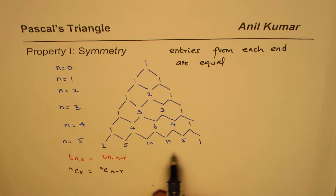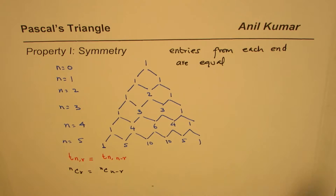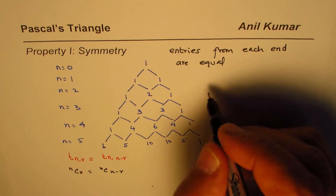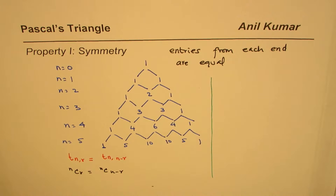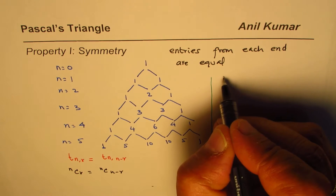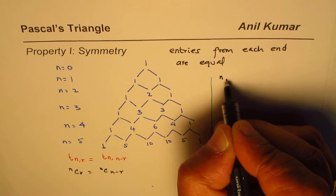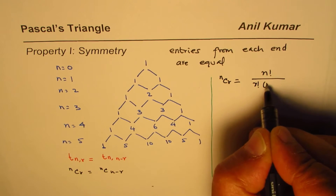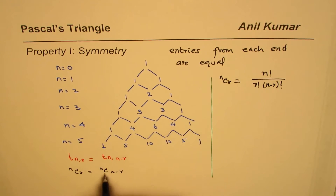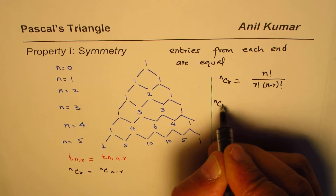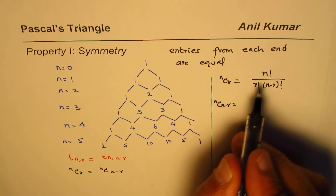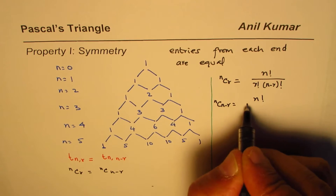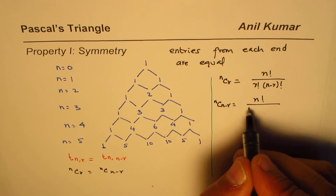Here is a simple proof. In general, nCr equals n factorial divided by r factorial times (n minus r) factorial. So what is nC(n minus r)? Using the same formula, the numerator is n factorial, and the denominator has (n minus r) factorial instead of r factorial.